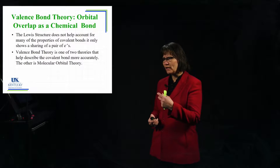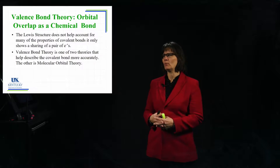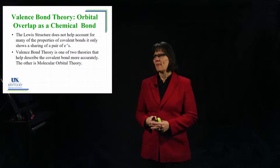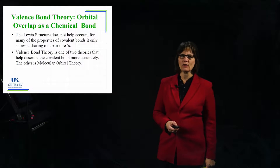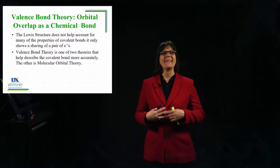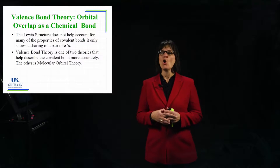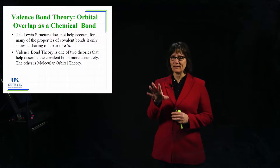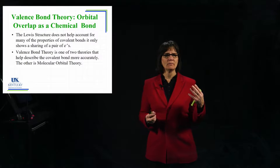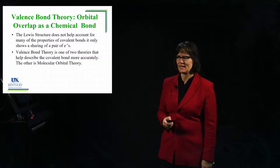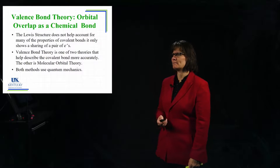When we start looking at valence bond theory, along with molecular orbital theory, these are going to give a more accurate depiction of what those electrons are doing. They start taking into account the shapes that we know molecules have, because Lewis structure bonding doesn't help us see why the shape would be the shape that it is.